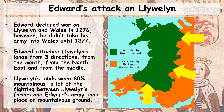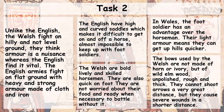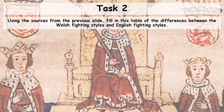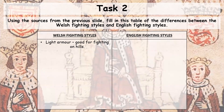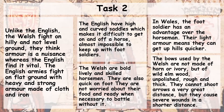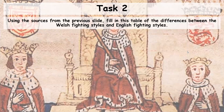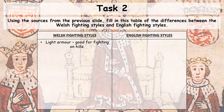Llewellyn's land was 80% mountainous, and a lot of the fighting between the two armies took place on mountainous ground. Here we have five statements about Llewellyn's Welsh army and King Edward I's English army. Using the sources on the last slide, fill in the table of differences between Welsh and English fighting styles. For example, in Welsh fighting styles you put 'light armour, good for fighting on hills.' Looking back at the source, it says in Wales the foot soldier has an advantage over horsemen — their light armour means they can get up hills quicker, and remember they are fighting in mountainous regions. Pause the video and complete that task on the worksheet, in your books, or on paper.